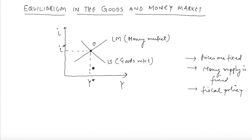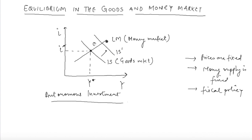Let's say because of some exogenous change in the goods market - there has been an increase in the autonomous investment component. That is an external change, which is why the IS curve will shift rightwards. We will notice that the new equilibrium is attained at point E', where the interest rate is higher than the previous interest rate and output is also higher. So the IS curve shifts, interest rate increases, output increases.